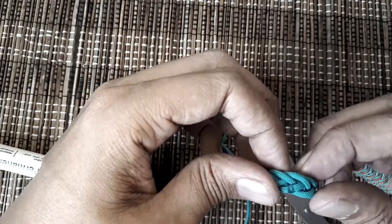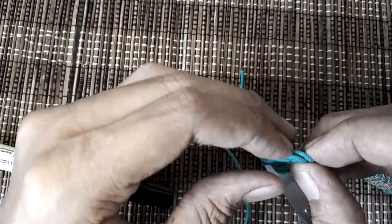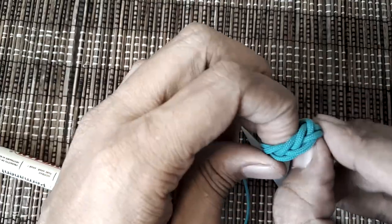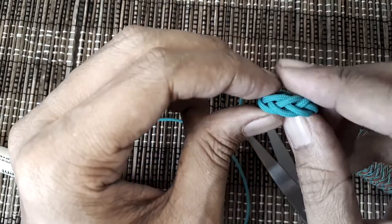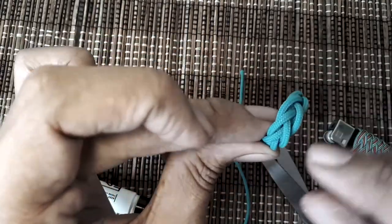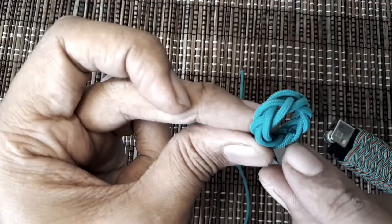And now you just simply flip the knot inside out. So the melted bits are now inside the knot.